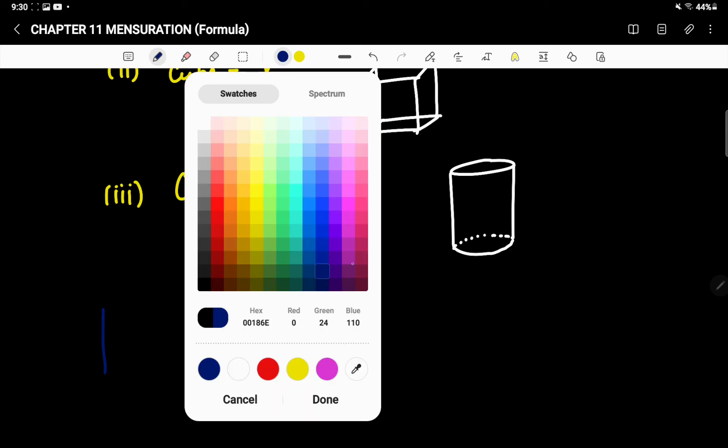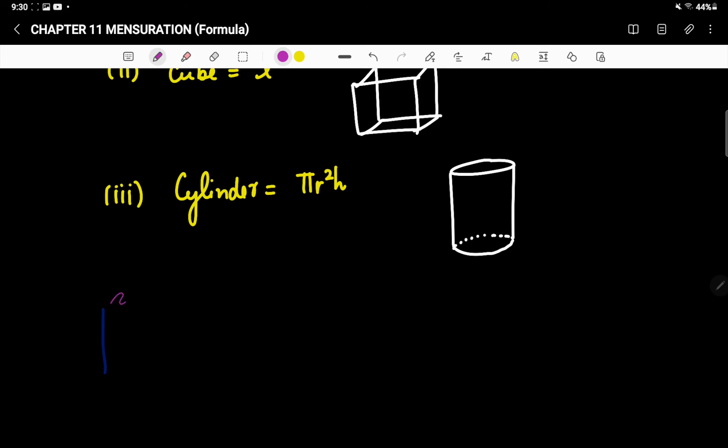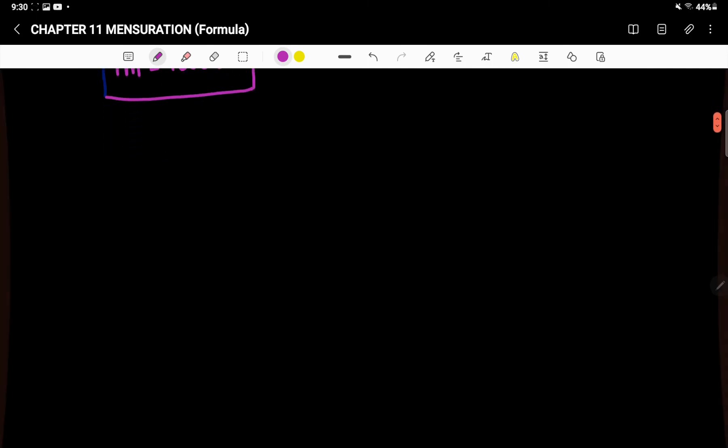This is just for your extra information. One meter cube is 1000 liters. So remember this point. So I hope you have understood this much. Now let us write down a few more formulas and then we'll start with the exercise.